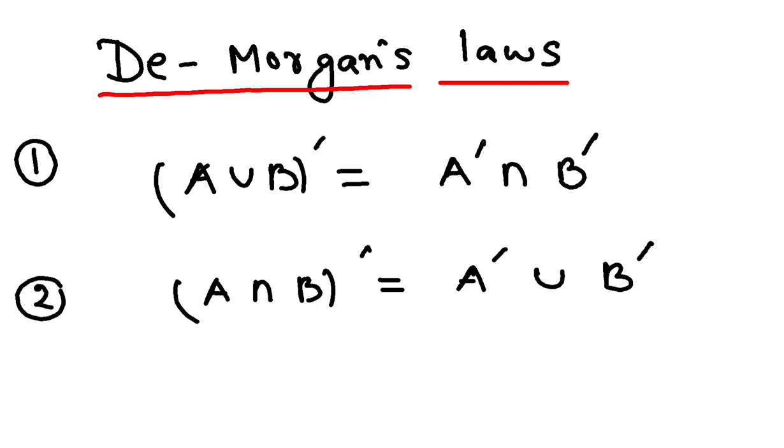Of course, you can prove these two results by taking examples for set A and set B. In one of our later classes, we will prove this using Venn diagrams also.